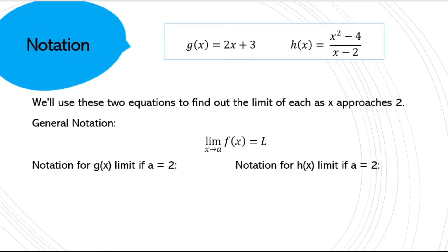I've written down two functions on the top, g(x) and h(x). It doesn't matter if it's f(x) or g(x) — they're still functions. Our general notation for a limit, and how we say this, is: the limit as x approaches a of a function f(x) can be assigned L. And we can solve for that limit.